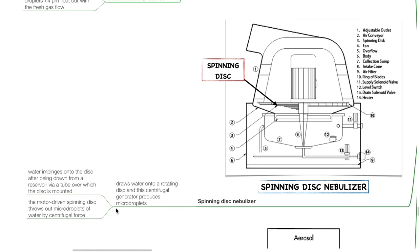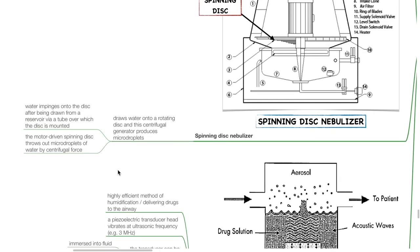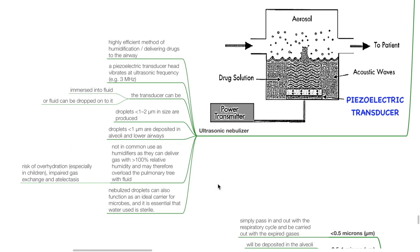The spinning disc nebulizer draws water onto a rotating disc and centrifugal force produces micro-droplets. The ultrasonic nebulizer is a highly efficient method of humidification and drug delivery; a piezoelectric transducer head vibrates at ultrasonic frequency, and droplets of less than 1–2 microns in size are produced. Droplets of less than 1 micron are deposited in the alveoli and lower airways. The ultrasonic nebulizer is not commonly used as it can deliver gas with more than 100% relative humidity, potentially causing overload of the pulmonary tree with fluid, impairing gas exchange and causing atelectasis. Nebulized droplets can also function as carriers for microbes, so the water used must be sterile.